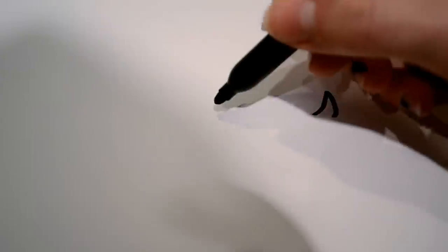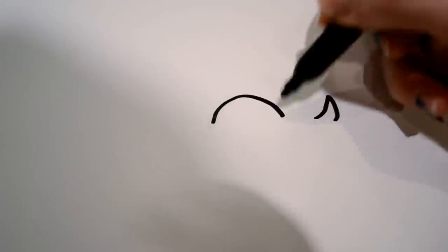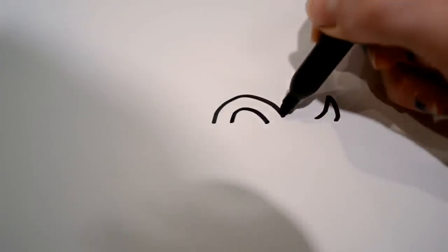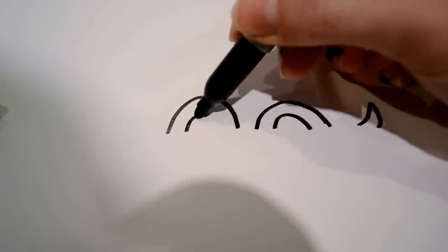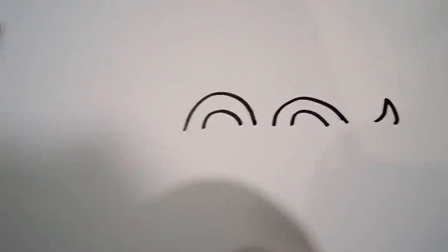First you start out by drawing the tail, which is just going to be a small line like that. And then you're going to want to draw two curved lines right next to it. And then a little bit further you're going to want to draw two curved lines a little bit taller, like that.